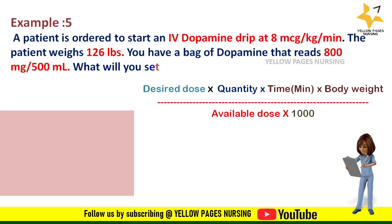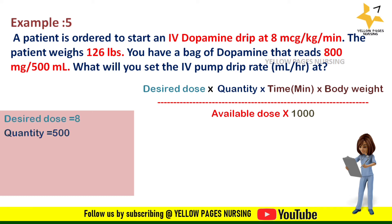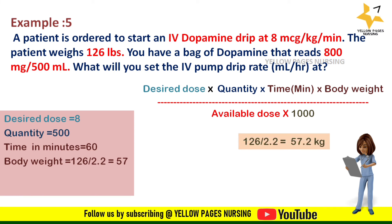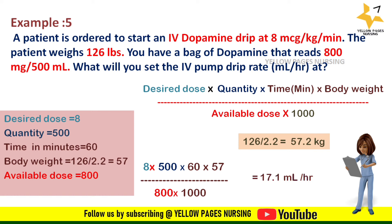Example 5: A patient is ordered to start an IV dopamine drip at 8 mcg per kg per minute. The patient weighs 126 lbs. You have a bag of dopamine that reads 800 mg per 500 ml. Here the desired dose is 8, quantity is 500, time in minutes is 60, body weight is 126 lbs — convert to kilogram: 126 divided by 2.2 gives 57.2, rounded to 57 kilogram. Available dose is 800. Applying all into the formula, we get 17.1 ml per hour.